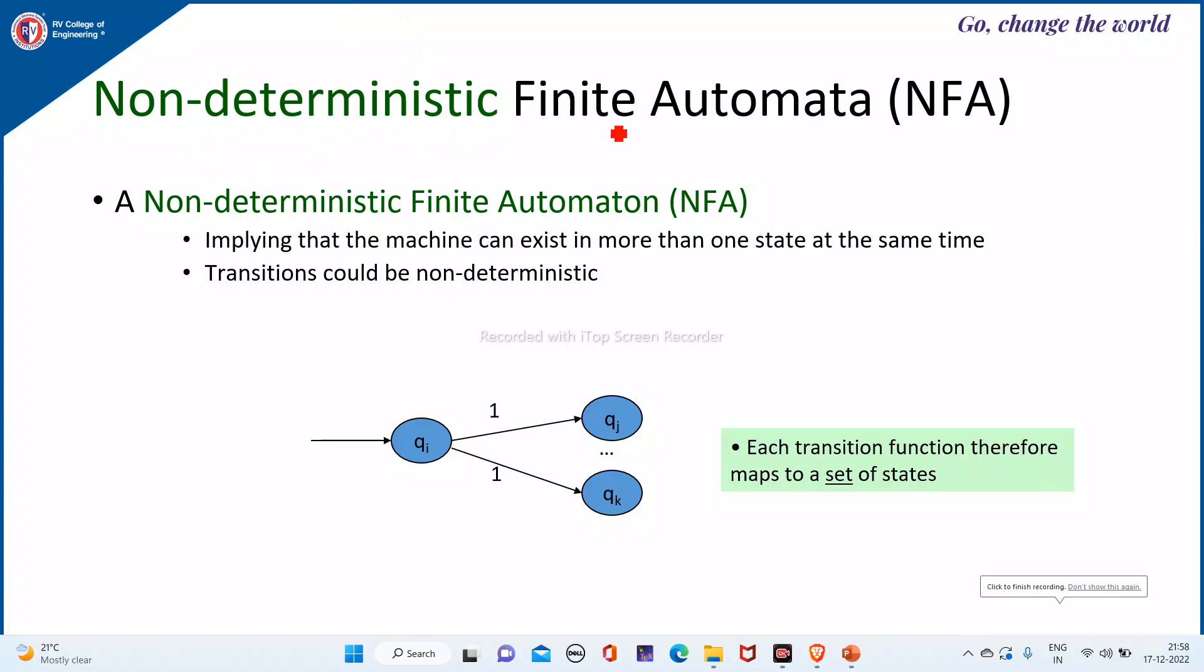Now start with NFA, non-deterministic finite automata. We have seen what is the meaning of non-deterministic in the previous videos. The non-deterministic meaning is that the machine can exist in more than one state at the same time and transitions could be non-deterministic. It means that for any state you may or may not have a single next state, or you have more than one next state, or on some inputs you may not have the transitions at all. So transition function maps to a set of states.